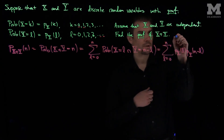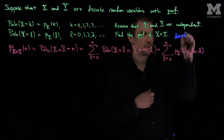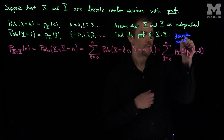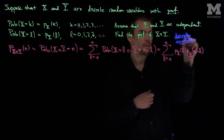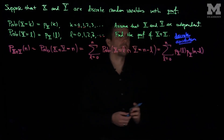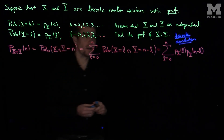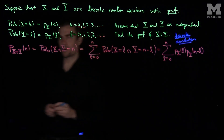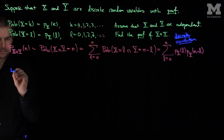This is the discrete convolution of those probability mass functions. So let's see an example of how this would work in practice.